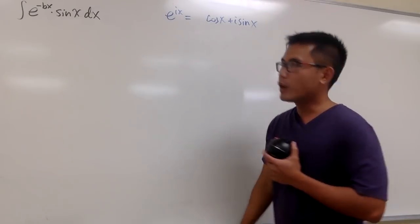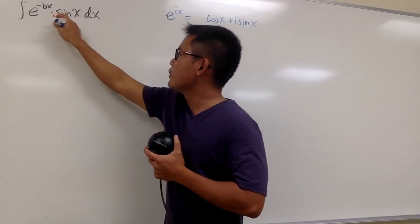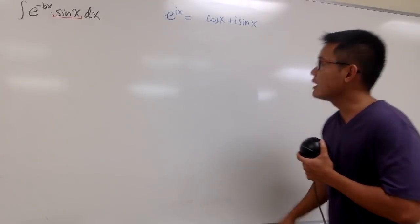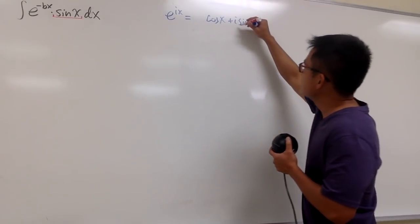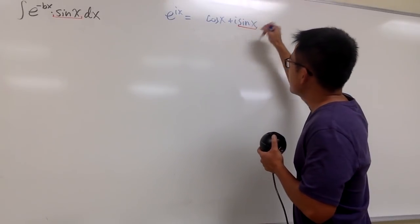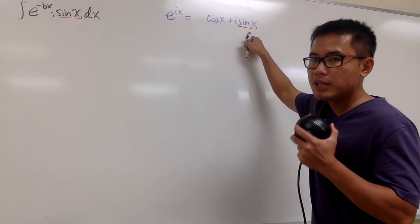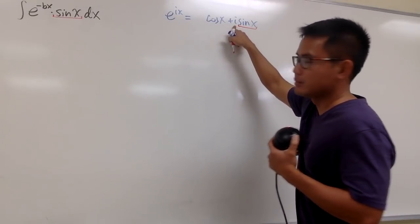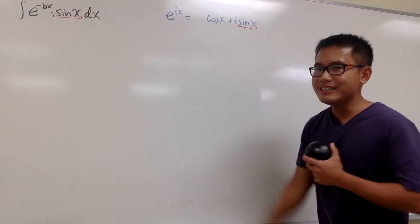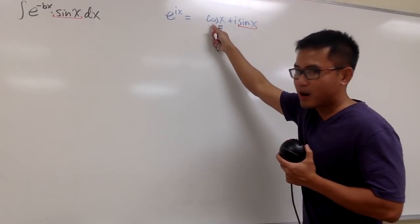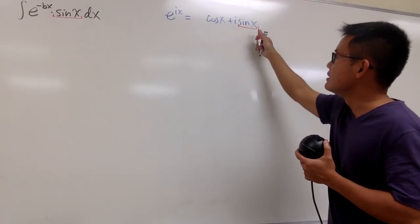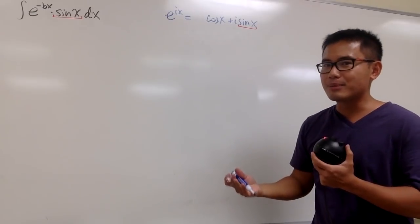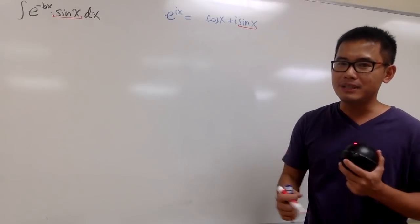From the original integral, you see that we have this sin x. And from Euler's formula, the sin x right here is what we call the imaginary part, because this is the one that's next to the i. This is the real part, and this is the imaginary part — just like a regular complex number, a plus bi.